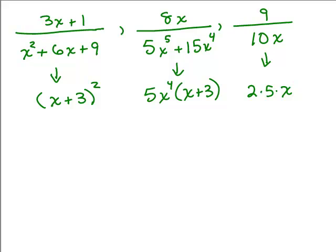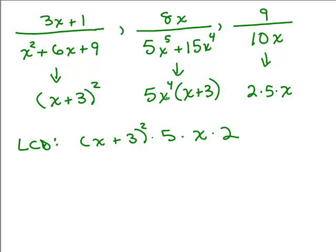Now we look at the different kinds of factors. We've got x plus 3, and we have 5 as a factor, x as a factor, and 2 as a factor. Now I look back and take the highest exponent for each. For x plus 3, the highest exponent is 2. For 5, there are no exponents. For x, the highest exponent is x to the 4th. And for 2, there's only one, so 2 to the first power. So the LCD is most easily written as 10x to the 4th times x plus 3 squared.